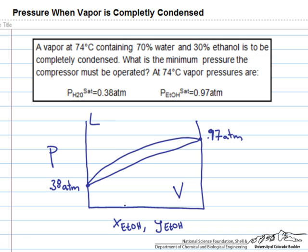And we start at 30% so we're somewhere in here. And we want to condense it completely to the liquid. And that means just increasing the pressure until it's completely a liquid and we're at this point.